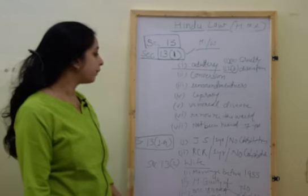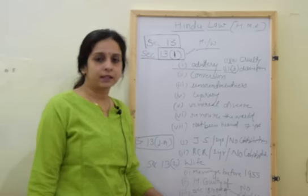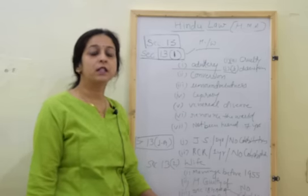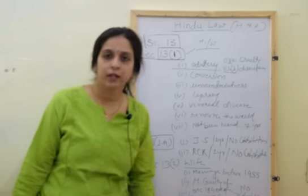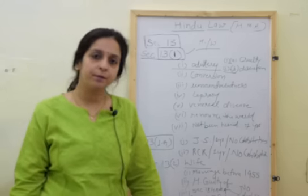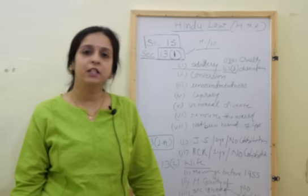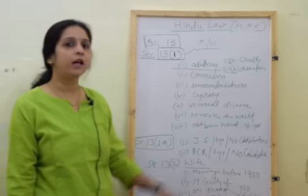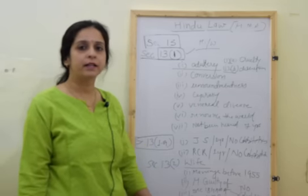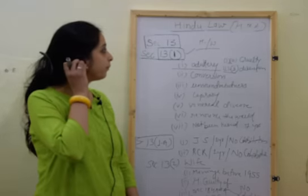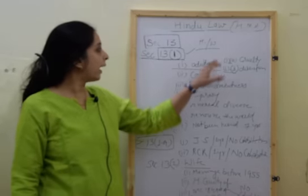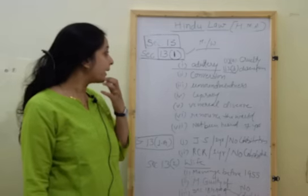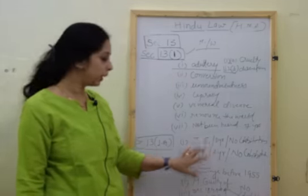And the last one: if any of the parties has not been heard from for the last 7 years — that is, we are not having any information whether that person is dead or alive — in that situation it is also a ground for divorce. So in total, there are 9 grounds under Section 13(1), and these grounds are available to both parties — husband and wife. Section 13(1) is talking about grounds available to both parties.